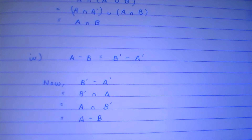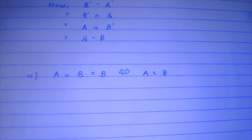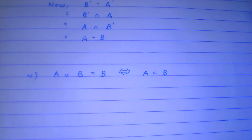Moving to the last one: we have to prove that A union B equals B if and only if A is a subset of B. This is a double implication. What this statement means is: if A is a subset of B then A union B is going to be equal to B, and if A union B equals B then definitely A is going to be a subset of B.